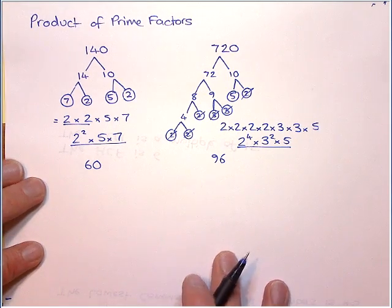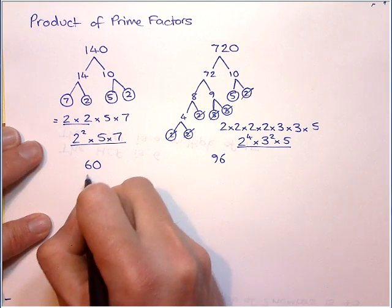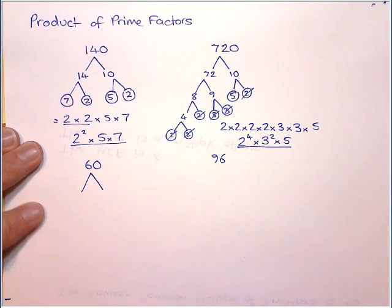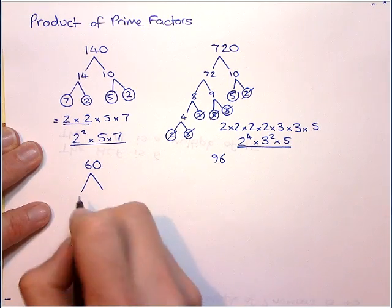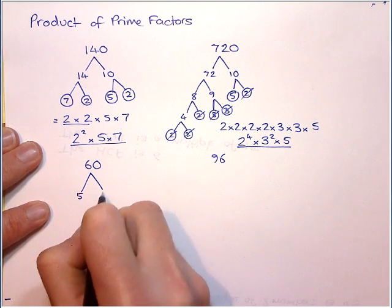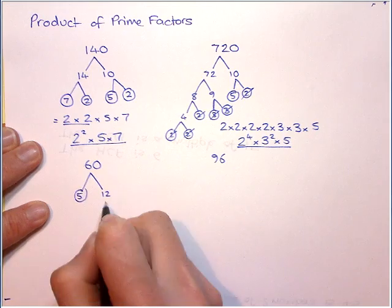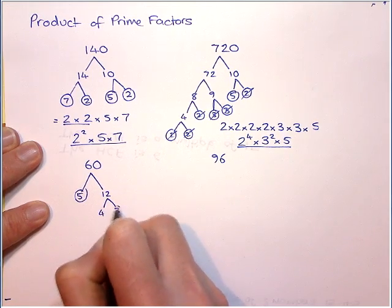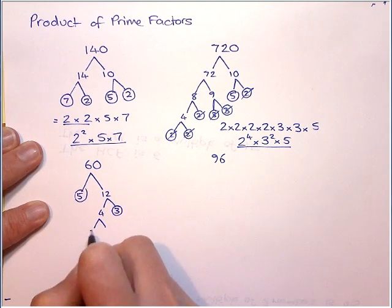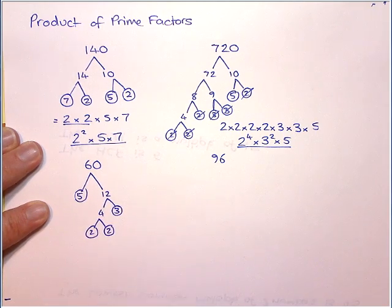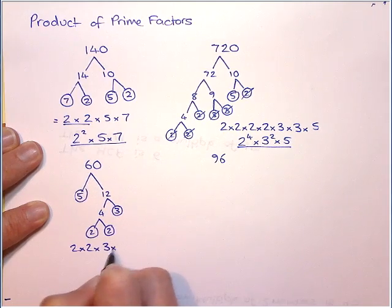Now here's number 60 and 96, so let's do this again. Then I'm going to take this one a little bit further. So I'm going to do 5 and 12 just to show you that it doesn't have to be the 10 times table. So that's prime. 4 and 3 makes 12, and 3 is prime. And then we have 2, and we have 2. So that is 2 times 2 times 3 times 5.